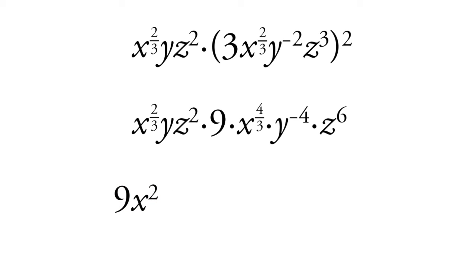Then we have y, and we have a y here that really is essentially y to the 1, because there's always an implied to the 1 after anything. And then we have a y to the negative 4th down here. So 1 minus 4 is negative 3. So we have y to the negative 3rd.